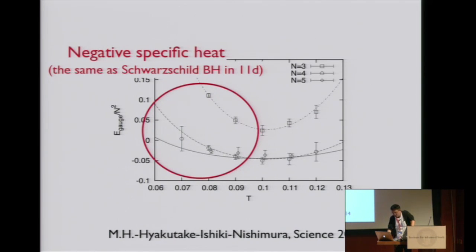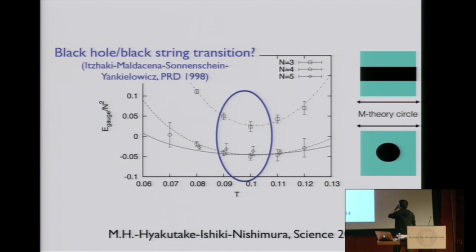It probably corresponds to the emergence of 11 dimension. This black zero-brane at very low temperatures should be connected to Schwarzschild black hole in 11 dimension, so negative specific heat can appear. Around T equals 0.1, specific heat turns from positive to negative.